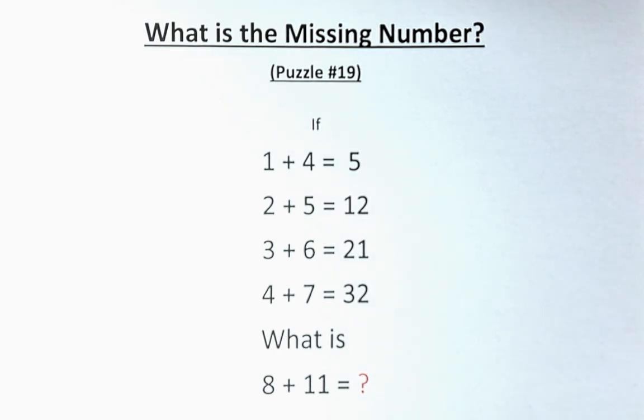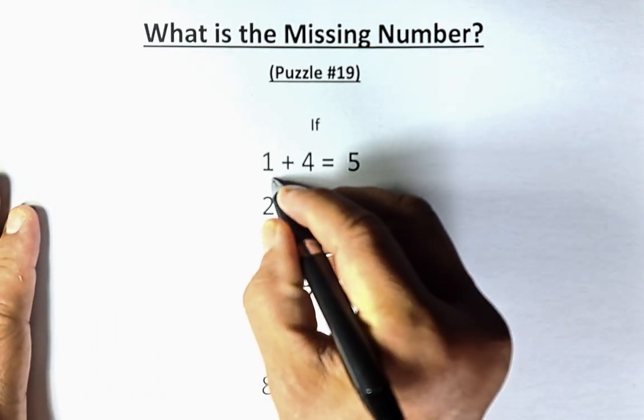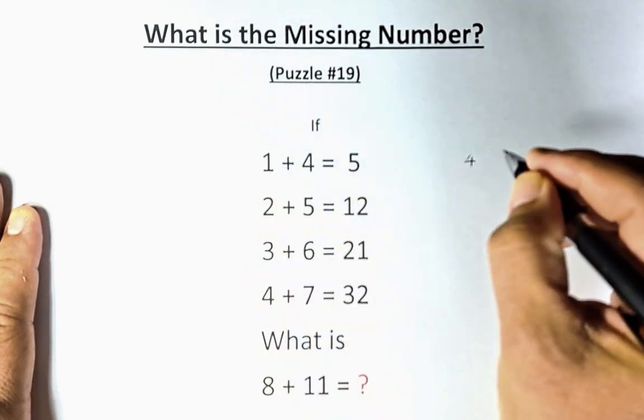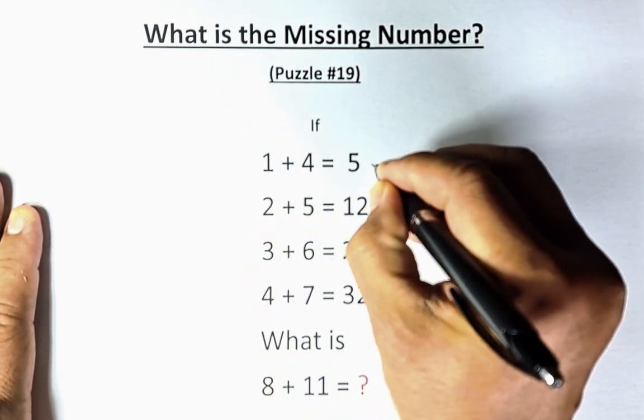The most common solution is going to look like this. So 1 plus 4 equals 5. We're going to take 1 times 4, so that is 4. And then you're going to add the first number, 4 plus 1, and that will give us 5.